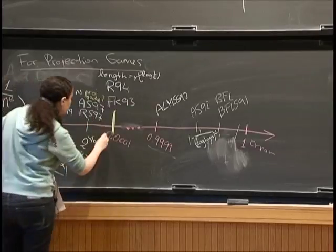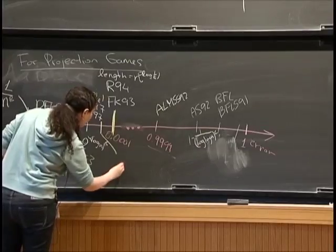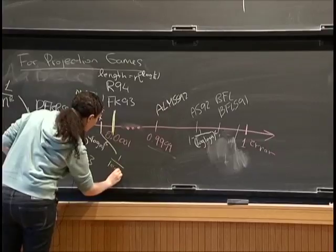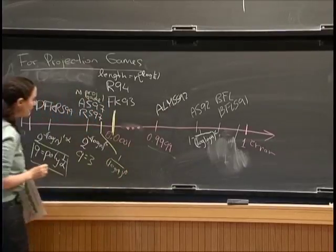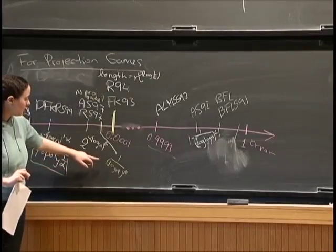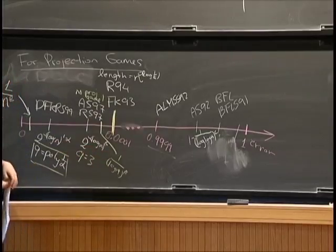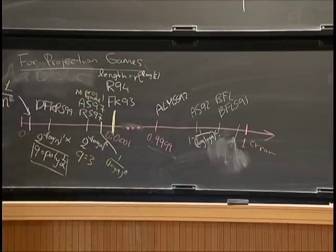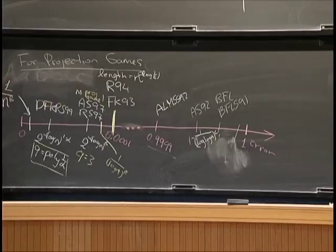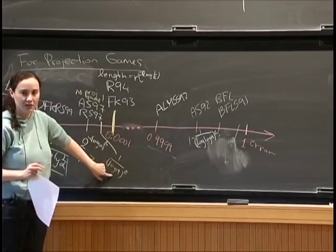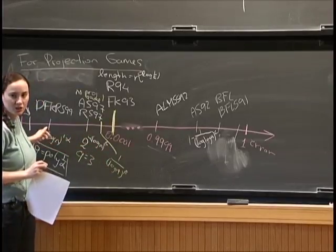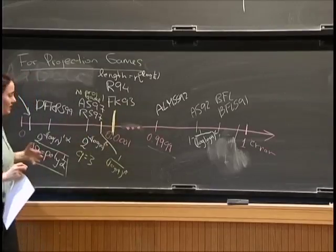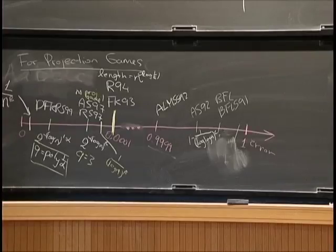What we are able to do is get projection games in the sub-constant error regime with error 1/log(n)^beta for some constant beta. This is much larger than the sub-polynomial results, but it tends to 0 as n tends to infinity, and it's better than the parallel repetition theorem. This is the target result.